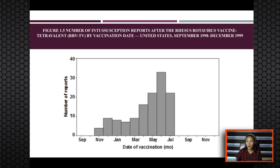Sometimes a graph shows the timing of events related to disease trends being displayed — for instance, the period of exposure or date control measures were implemented. Studying a graph that notes the period of exposure may lead to insights into what may have caused the illness, and studying the graph that notes the timing of control measures shows what impact, if any, the measures may have had on disease occurrence.